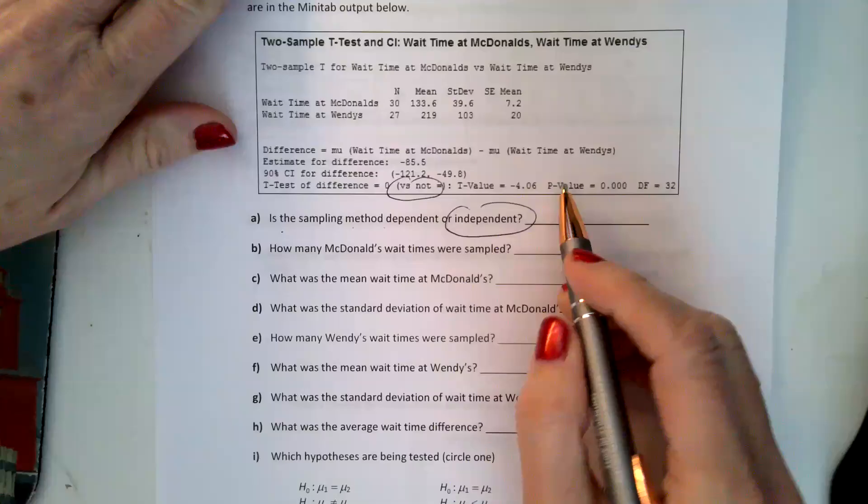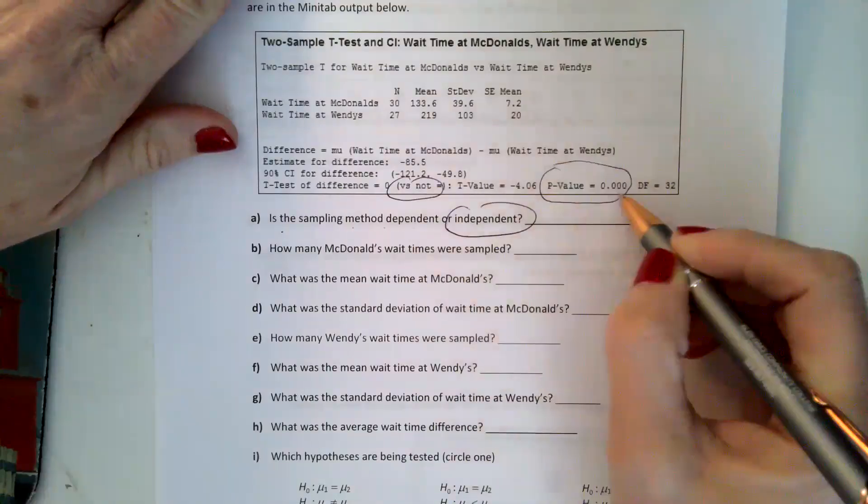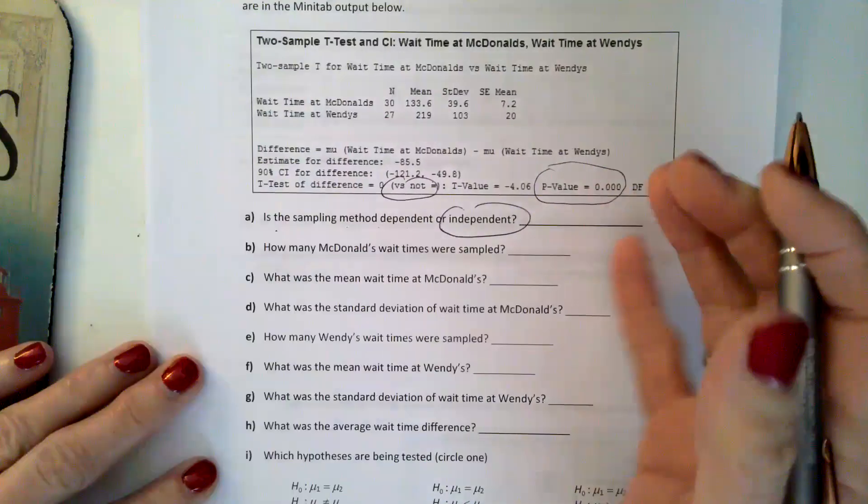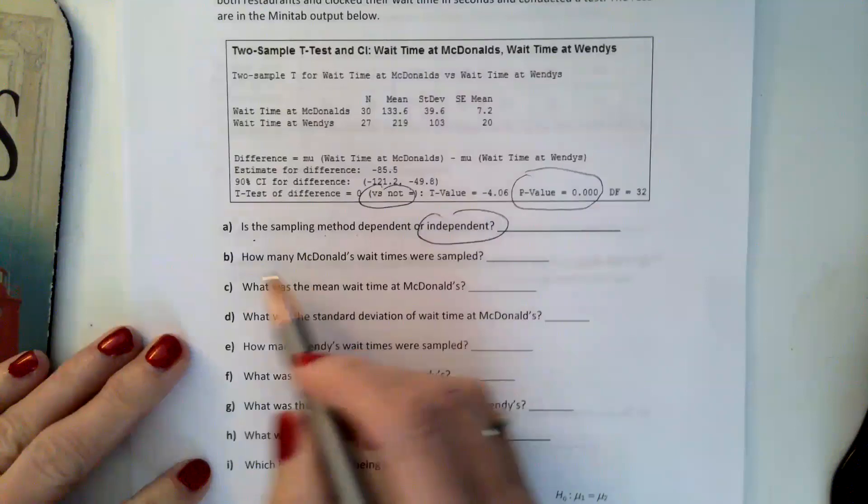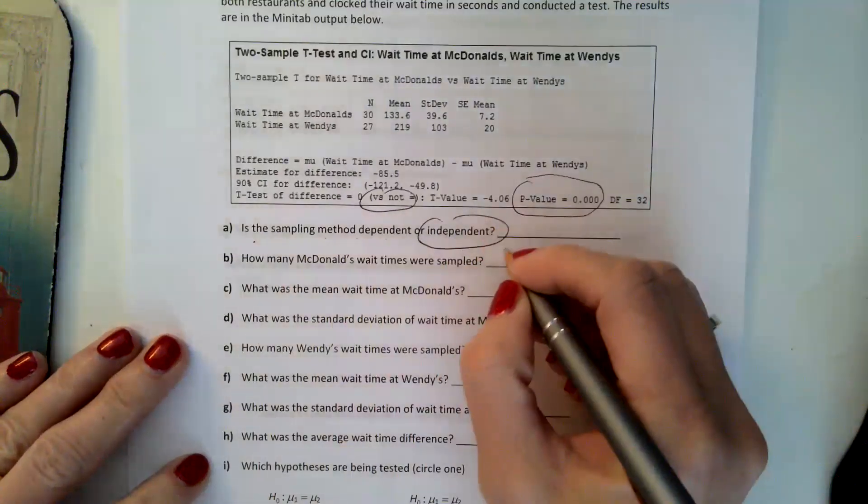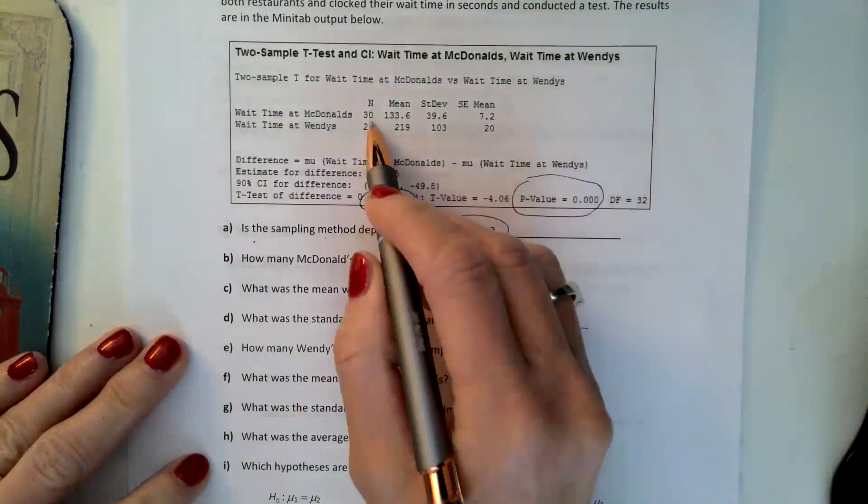And then the p-value there, which remember we said when it says 0.000, it's just so small they couldn't write the number. So let's go through the list. It says how many McDonald's wait times were sampled? And there were 30. You can see that here at the end.